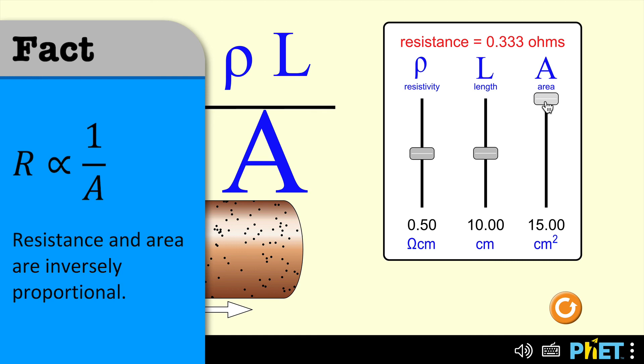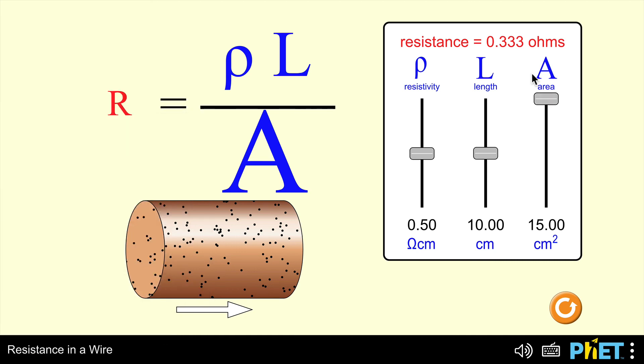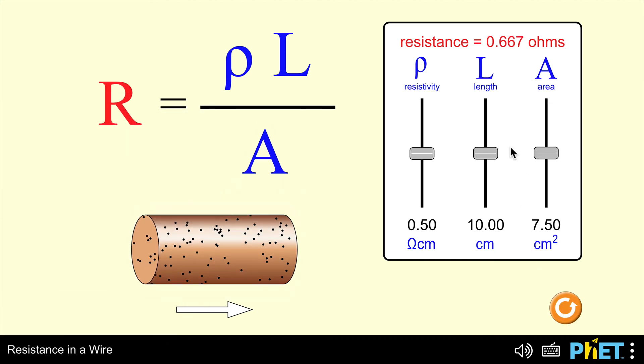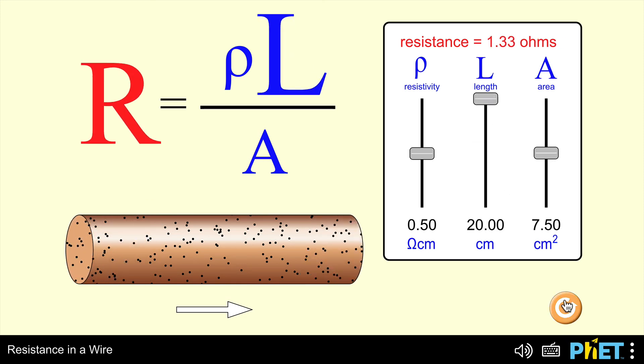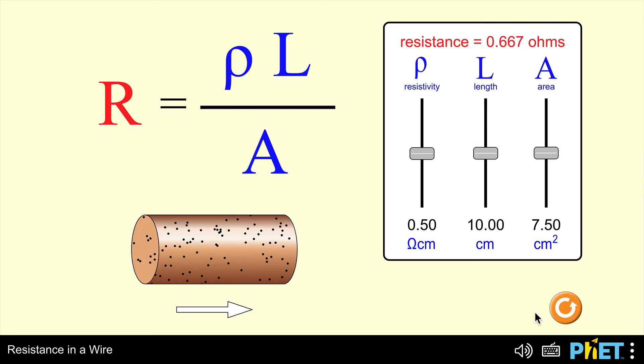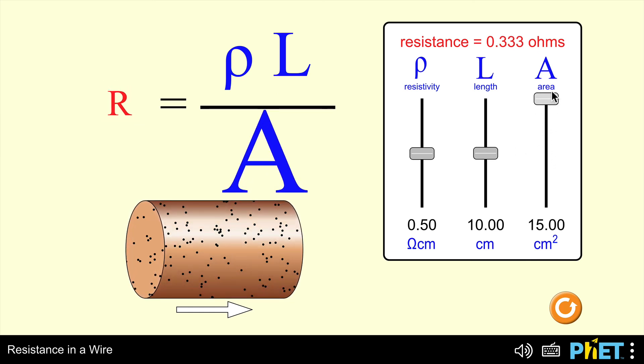The relationship between resistance and length: when length doubled, resistance doubled, meaning they're directly proportional. But when cross-sectional area doubled, the resistance halved, meaning it's inversely proportional.